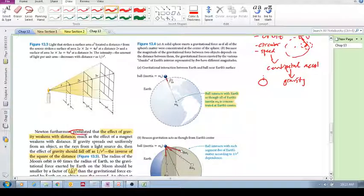Newton further postulated that the effect of gravity weakens with distance. The further an object is away from the Earth, the weaker that gravitational effect. It's a field force, not a contact force, and he postulated that gravity spreads out in a similar way that the intensity of light spreads out.